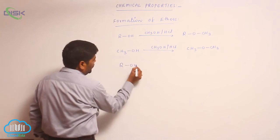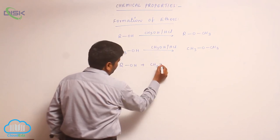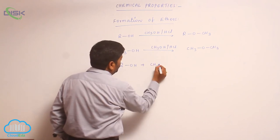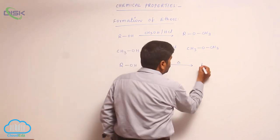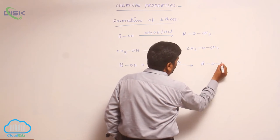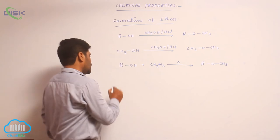An alcohol reacts with diazomethane. This is an important reaction. Diazomethane loses N2 followed by heating, so it converts into ROCH3. For example...